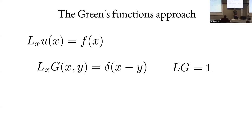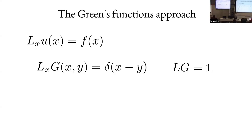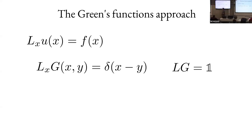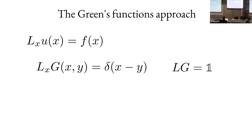The strategy is: we define the Green's function as the solution of an associated equation. We forget about the driving force and instead put a delta function, so the Green's function depends on x and y, with the differential operator acting on x. You can already see that in terms of matrices, the Green's function is essentially the inverse of the operator — symbolically, G equals L to the power of minus one.